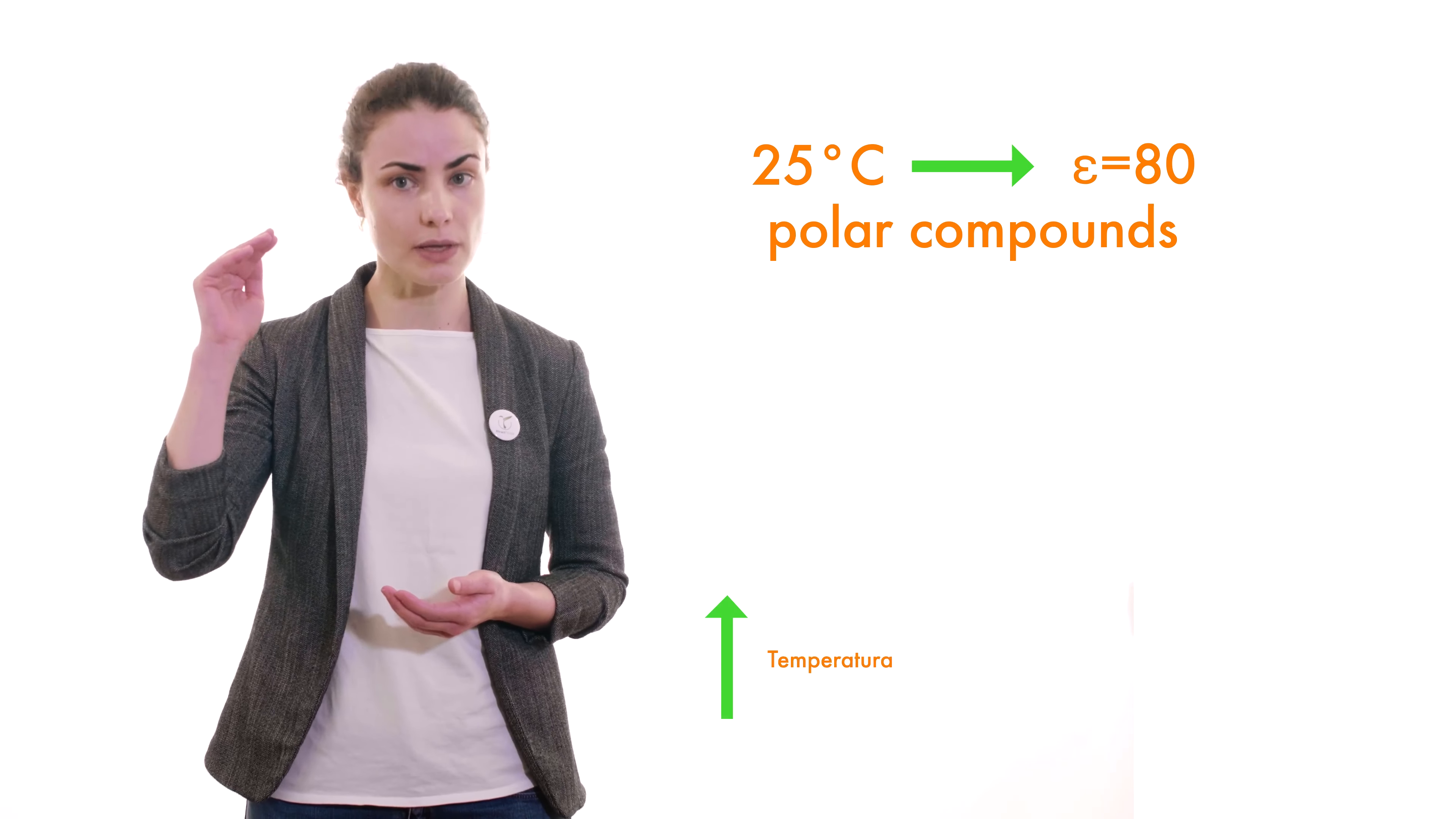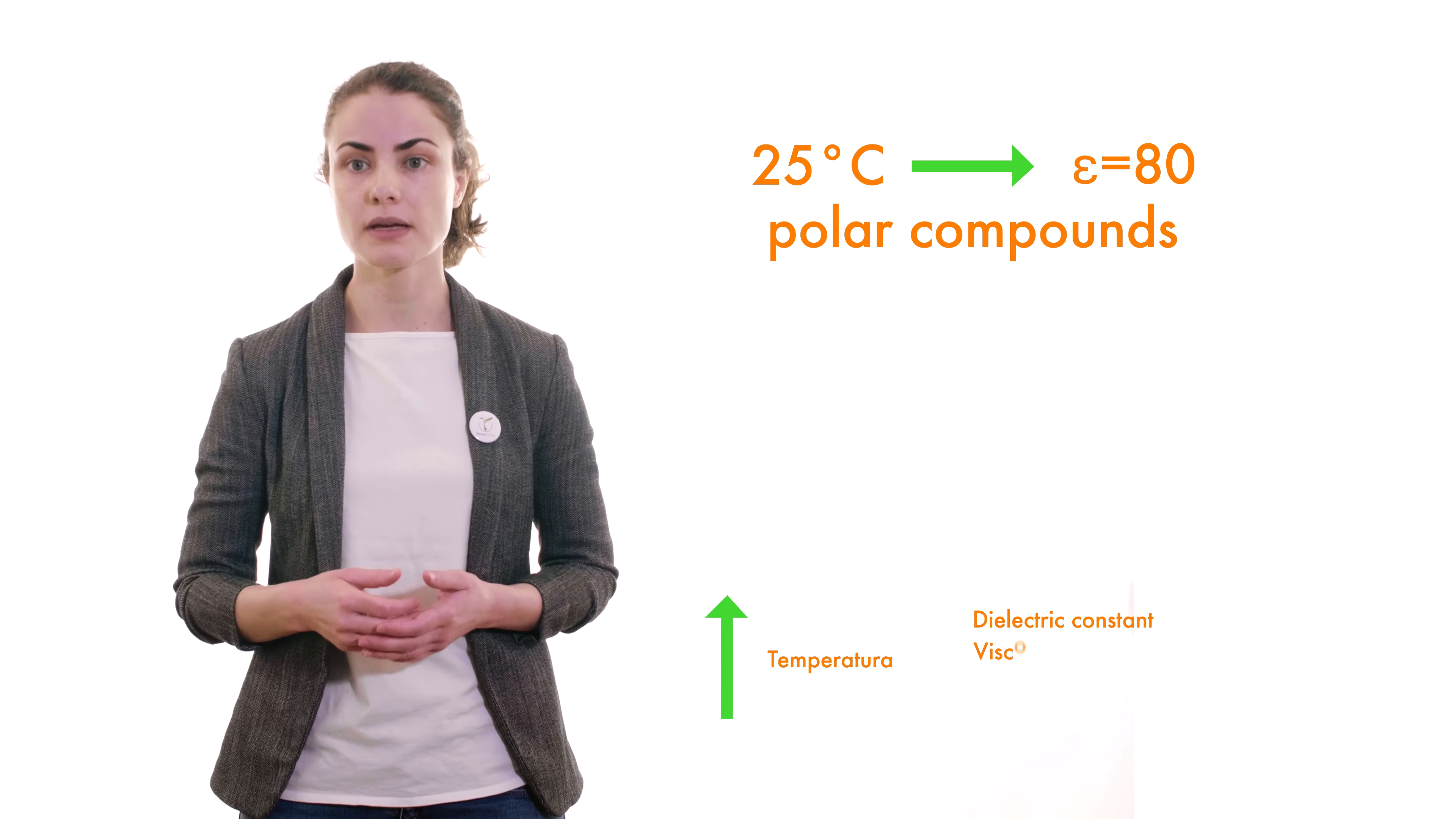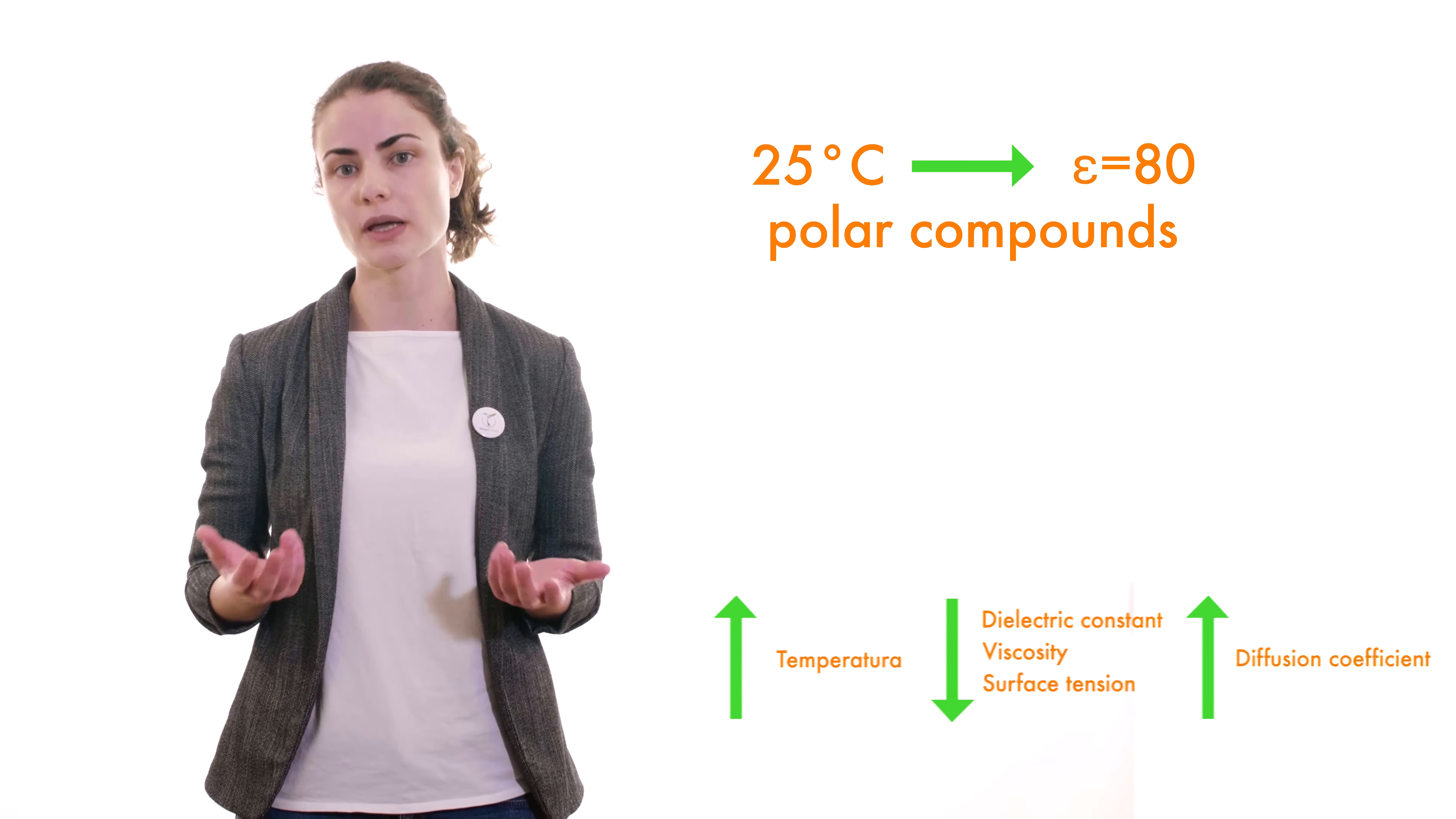With the increase of temperature, the physical chemical properties of subcritical water change drastically. Its dielectric constant, viscosity, and surface tension all decrease, and its diffusion coefficient is improved with increasing water temperature.